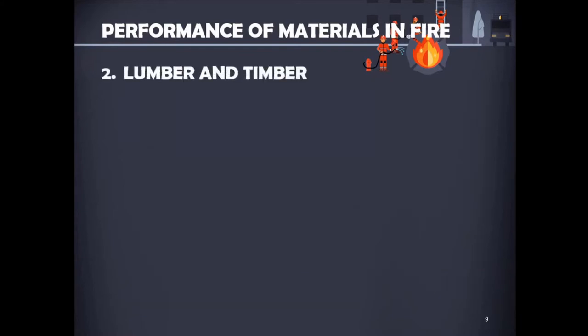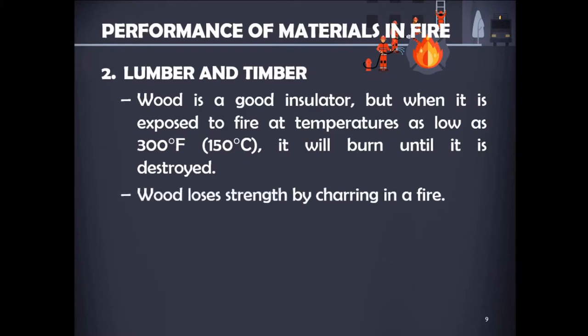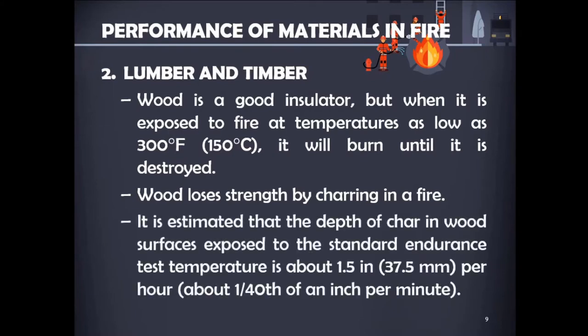The second material is lumber and timber. Wood is a good insulator, but when exposed to fire at temperatures as low as 300°F (150°C), it will burn until it is destroyed. Wood loses strength by charring in a fire. The penetration of surface charring is fairly consistent with time — estimated at about 1.5 inches or 37.5 mm per hour, or about 1/40 of an inch per minute.